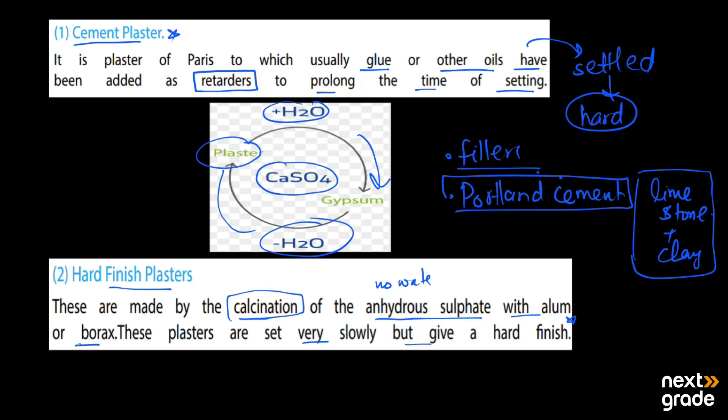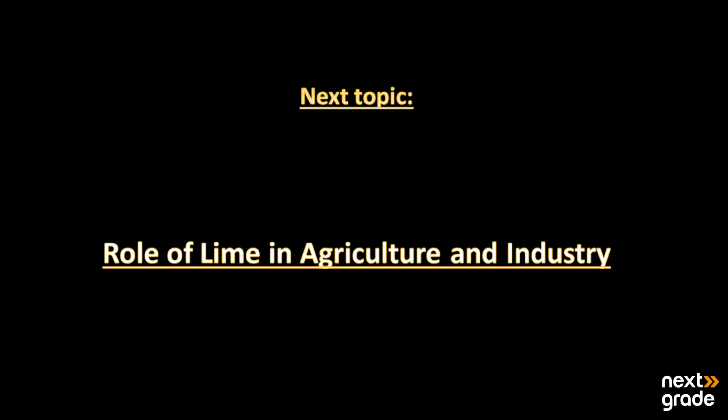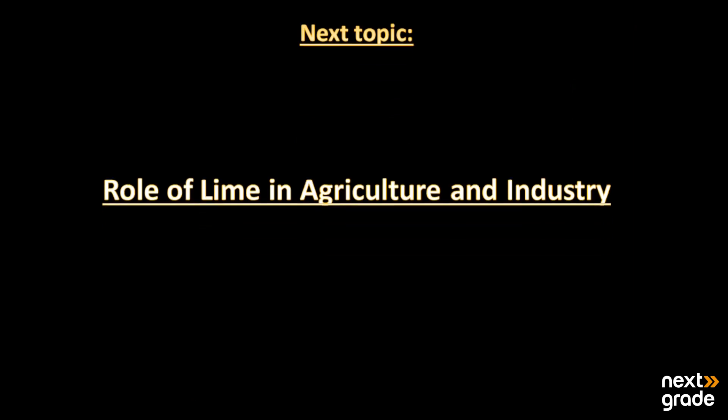We gain Portland cement which is used to make houses or to join different bricks. This was a simple overview about the uses or the role of gypsum in our agriculture and industries. I hope you understand, and if you have any queries you may ask me. The next topic we will discuss is the role of lime in agriculture and industry. For that time, have a good day and keep learning.